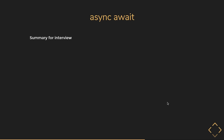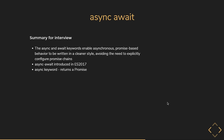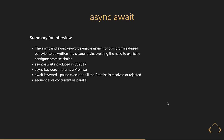The async and await keywords enable asynchronous promise-based behavior to be written in a cleaner style, avoiding the need to explicitly configure promise chains. During an interview, explain that in ES2017, async/await was introduced to write async code in a cleaner way. Explain first about the async keyword (it always returns a promise), then about await (it pauses execution until the promise resolves or rejects). Sequential versus concurrent versus parallel execution will definitely give you an edge if you can explain it well.